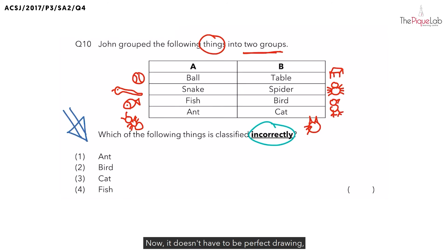Now it doesn't have to be perfect drawing. As long as you can tell that this is a cat, there is a bird, it is fine. After looking at the drawing of these things, you would be able to better visualize how they are being grouped. Can you look at the drawings now and tell me how do you think they are being grouped?